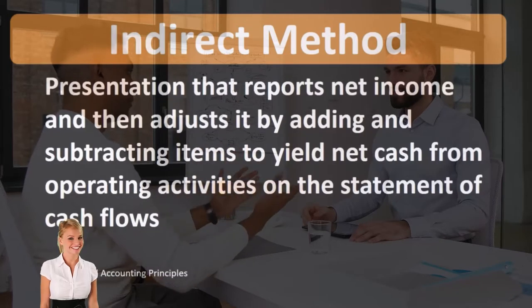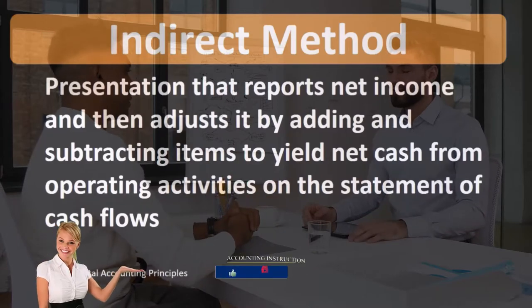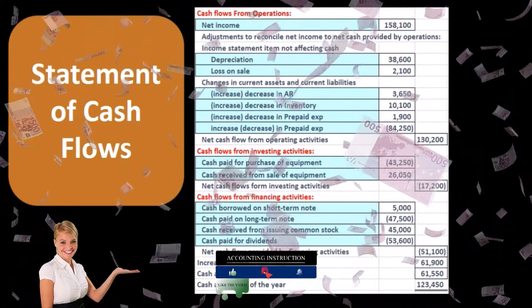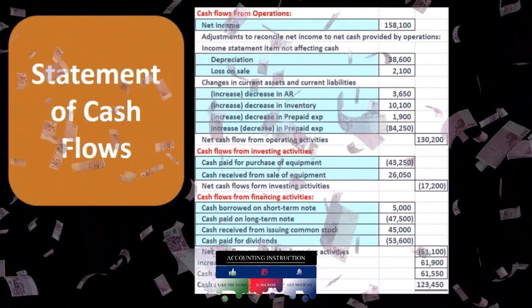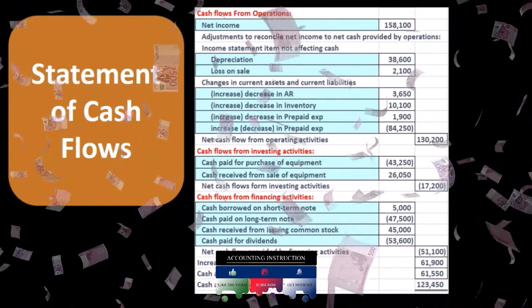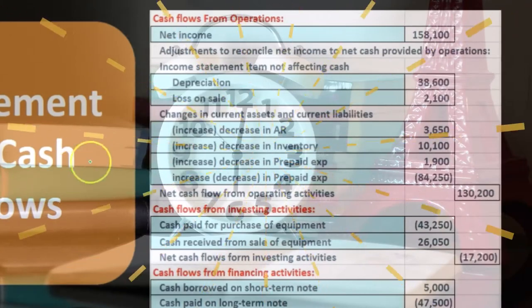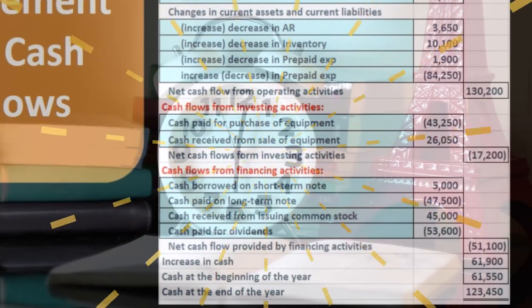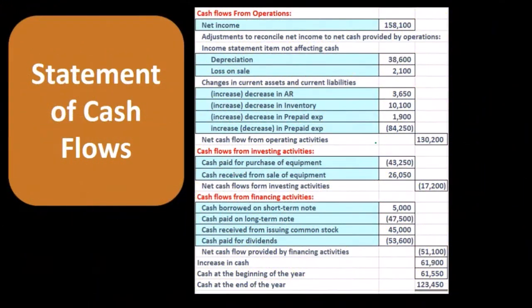When we look at the indirect method, we are considering the statement of cash flows, which can be done in two general ways: the indirect method and the direct method. The indirect method is actually more common for a few reasons. One is that we have already calculated net income, so it makes sense to start with net income and back into the cash flows from operations on a cash basis.